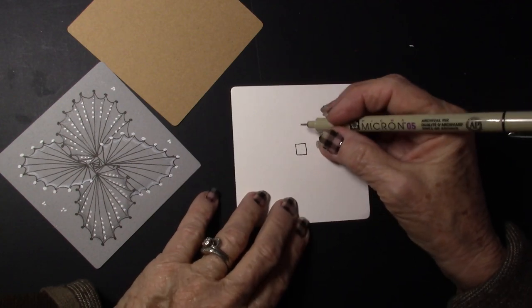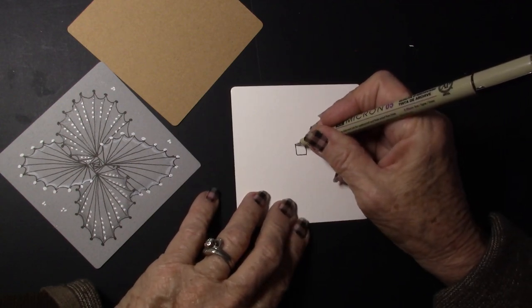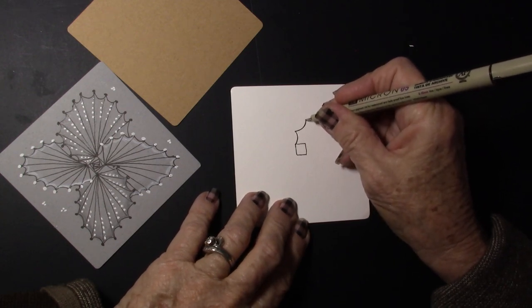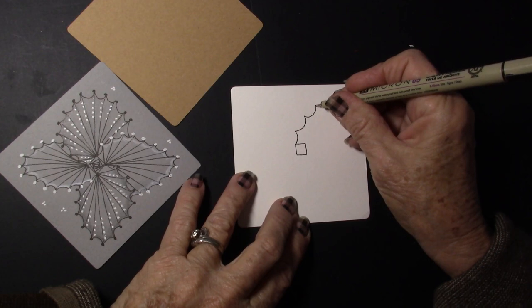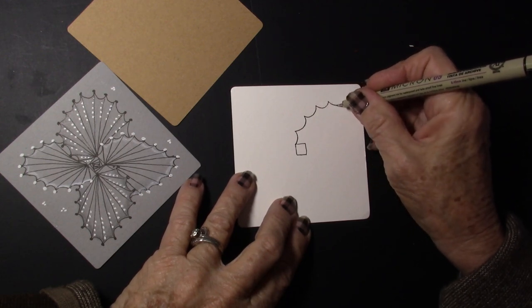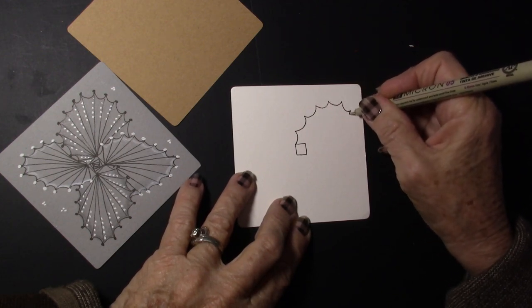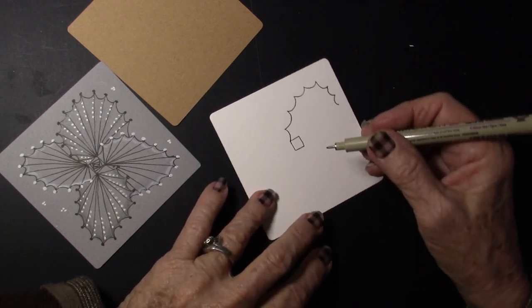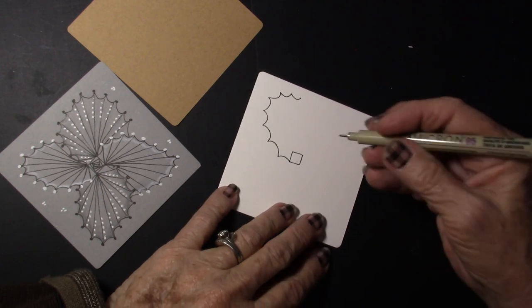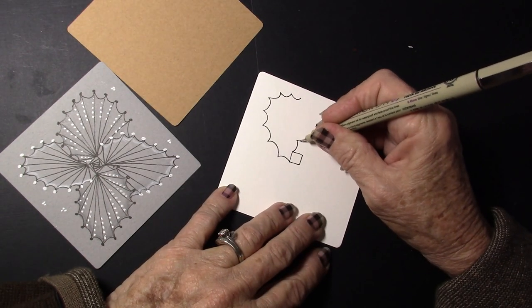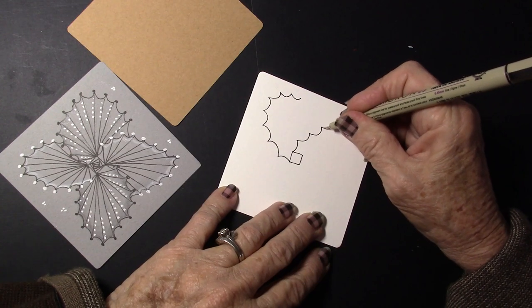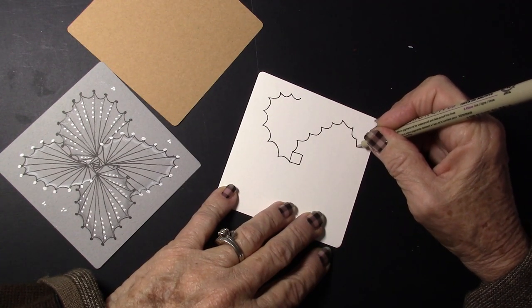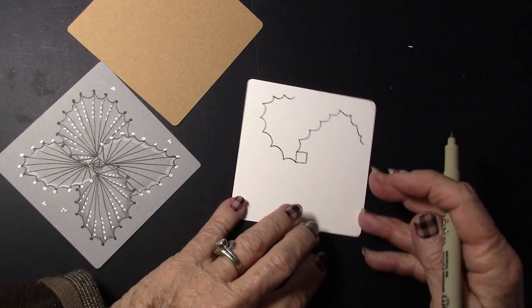And then we're going to come out from one of the corners and we're going to do an outgoing scallop. And I like to turn it so it kind of comes up and in. Then we're going to rotate and we're going to do the same thing.